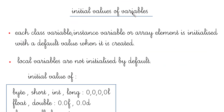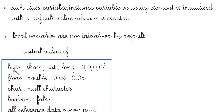Moving on to initial values: class variables, instance variables, and array elements are initialized with a default value when created. Local variables, however, do not have any initial value — they are not initialized by default. Local variables are those declared within a scope such as a for loop or within a method.